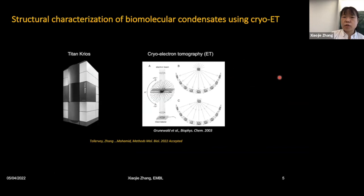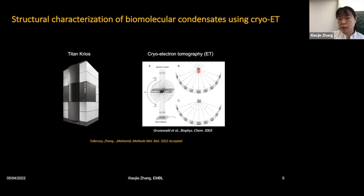To image biomolecular condensates, which are relatively thick samples for electrons to penetrate, I used a branch of cryo-TEM called cryo-electron tomography. Using a state-of-the-art Titan Krios microscope, I tilt the specimen containing the condensates across a range of plus or minus 70 degrees. By collecting projection views at different angles, we can computationally reconstruct these projections into a three-dimensional volume to see molecular-resolution details within the biomolecular condensates.